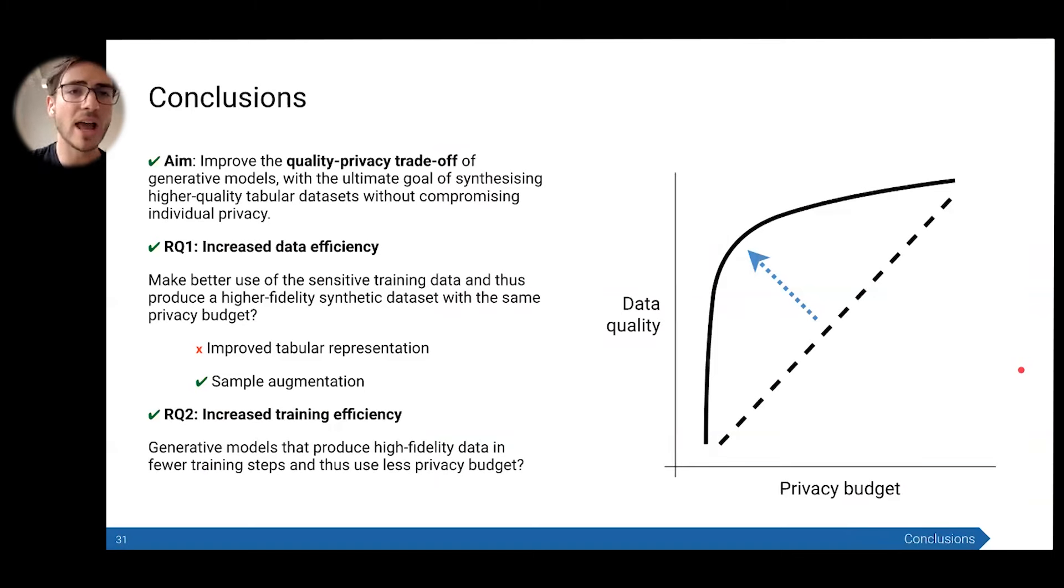In conclusion, our aim was to improve this quality-privacy tradeoff of generative models and synthesize higher quality tabular datasets without compromising privacy. We were able to do this by increasing data efficiency. We didn't do it through the tabular representation with the attention-based models, but we did it by doing that sample augmentation with the diffusion models. They're getting to see the same data again and again augmented in different ways with the noise and just train a lot more for each privacy hit that we had to take, which pushes up our curve. We also increased the training efficiency by actually having way more stable training compared to GANs. It was much more tractable learning process with smoother learning curves. Both of these work together and increase our data quality at any given privacy budget and effectively achieve the aim.